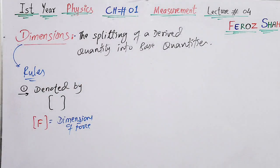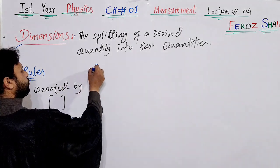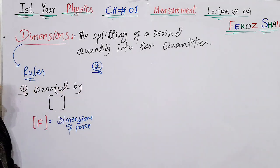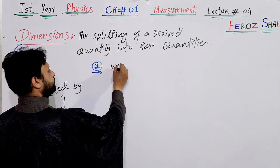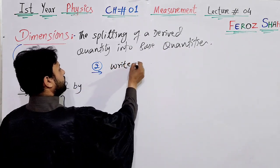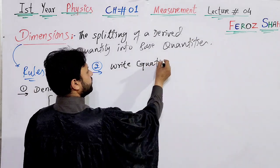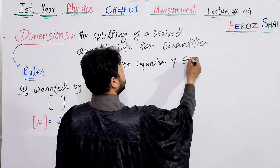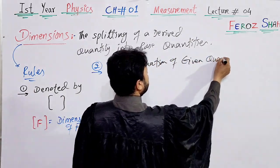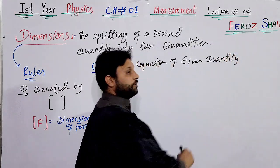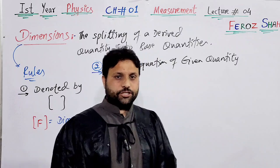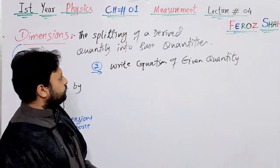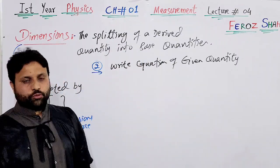Similarly, when we put V in square brackets it represents the dimension of speed or velocity, and so on. That is rule number one. Rule number two is: write the equation of the given quantity — the quantity for which you want to find the dimension, you have to write the equation of that quantity.